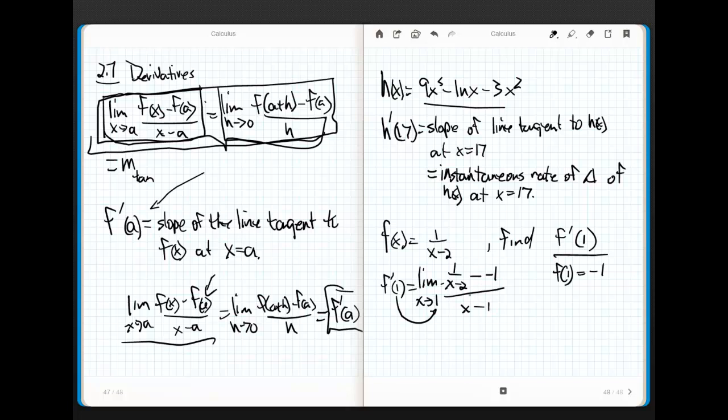Again, if I throw in x equals 1, I'm going to end up with negative 1 plus 1, which is 0 over 0. So it's time to do some algebra. Let's clean this thing up. I'm going to get the limit as x approaches 1 of 1 over x minus 2 plus 1 over x minus 1. Find a common denominator and let's see what happens. The limit as x approaches 1 of 1 plus x minus 2 over x minus 2 all over x minus 1.